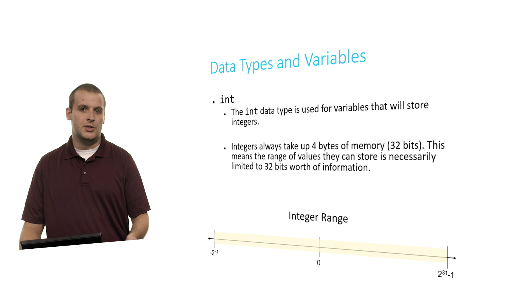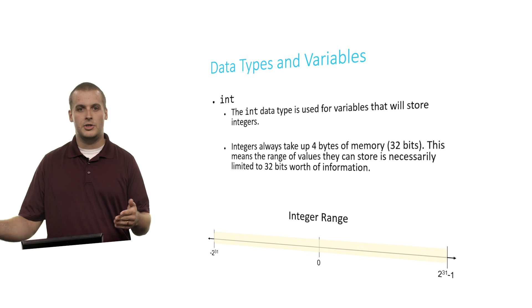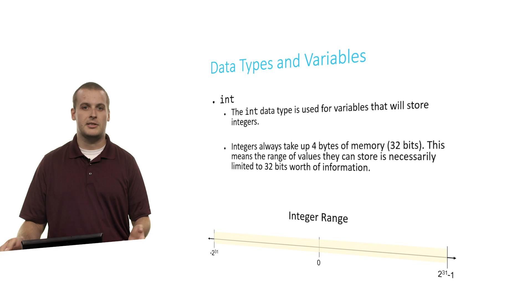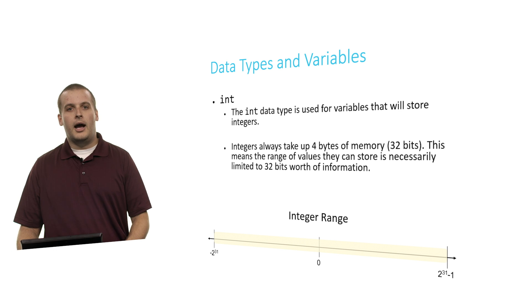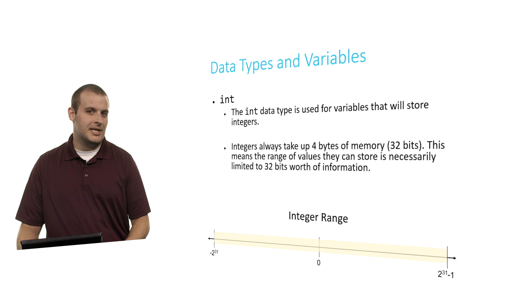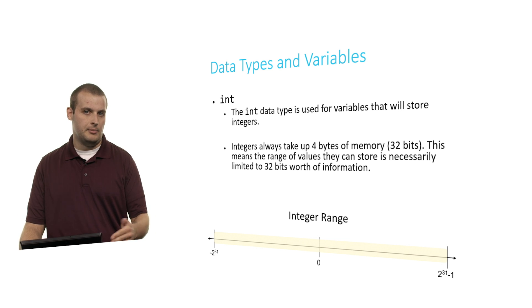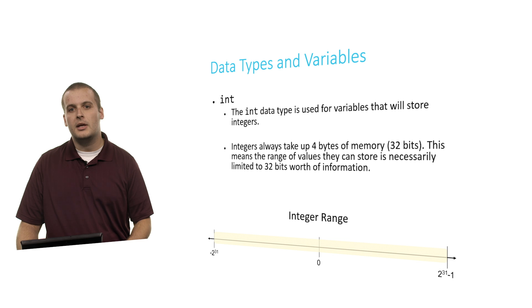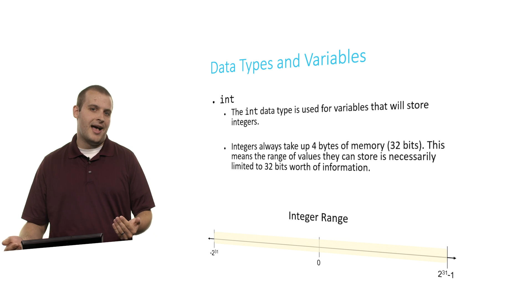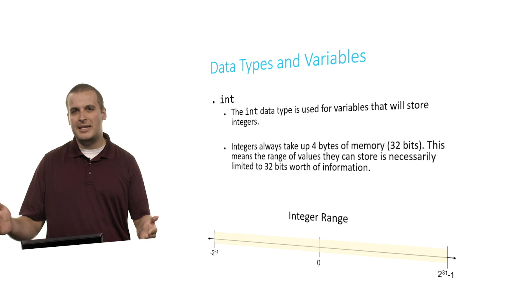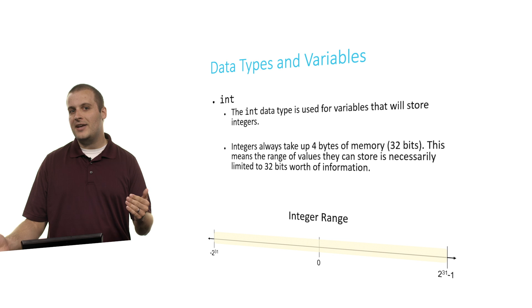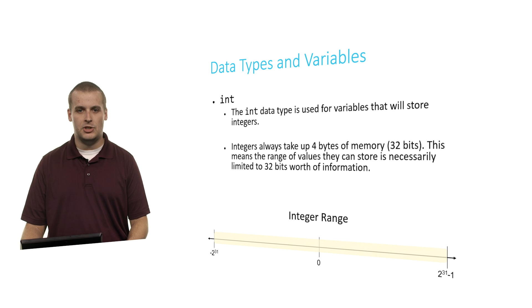The first is int. The int data type is used for variables that will store integer values — so 1, 2, 3, negative 1, 2, 3, and so on. Integers always take up four bytes of memory, which is 32 bits. There are eight bits in a byte. So this means that the range of values that an integer can store is limited by what can fit within 32 bits worth of information.